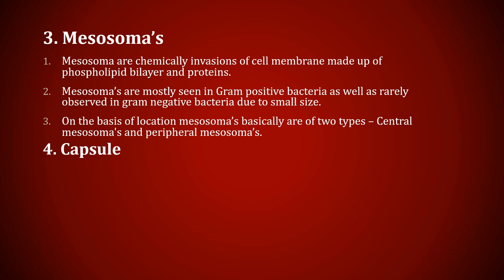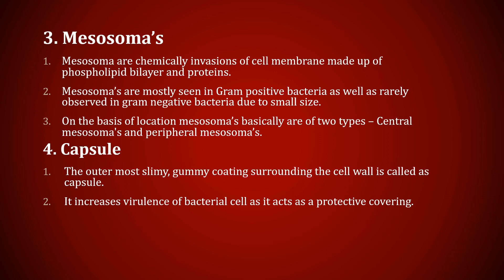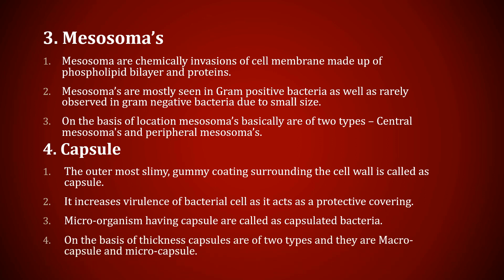The fourth one is capsule. The outermost slimy, gummy coating around the cell wall is called the capsule. It increases the virulence of the bacterial cell as it acts as a protective covering, protecting the bacterial cell against various environmental factors. Microorganisms having a capsule are called capsulated bacteria, and those without one are non-capsulated bacteria. On the basis of thickness, capsules are of two types: macrocapsule and microcapsule. Capsules with at least 0.2 micron in thickness that can be observed under a light microscope are macrocapsules.